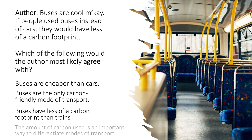The correct answer: 'The amount of carbon used is an important way to differentiate modes of transport.' This is correct because the author emphasizes how carbon footprint is an important factor. But the way it's disguised is by throwing in the word 'differentiate.' Some students, if they don't know that word, will skip it and pick an answer whose words they recognize — so the correct answer is hidden behind tough vocabulary.